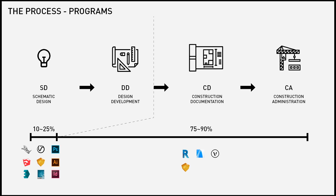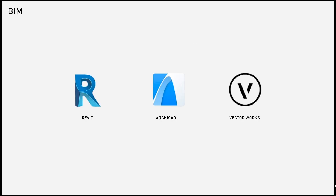It's important for those starting out to take a step back and think critically, because the program you decide to learn right now will dictate the kind of work you end up doing. If schematic design and design development is what excites you, you might want to reconsider making Revit your first priority. Perhaps spend more time learning design softwares, because if you prove you're competent in them, they'll have you doing that work even though the time spent on it is smaller. Moving on — let's talk about BIM.